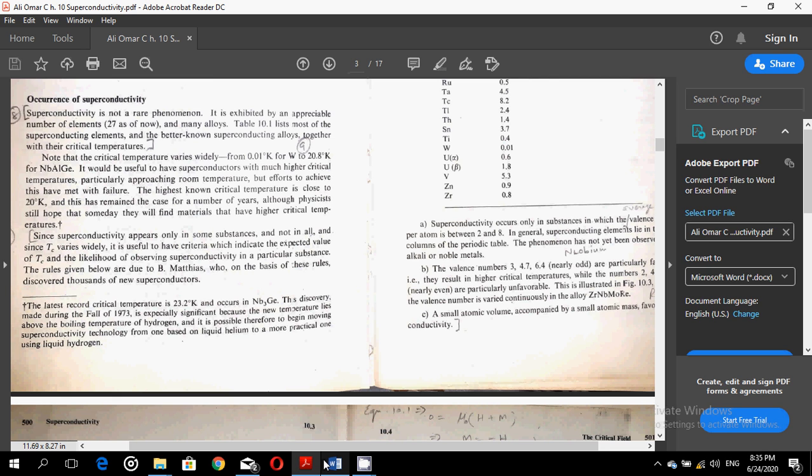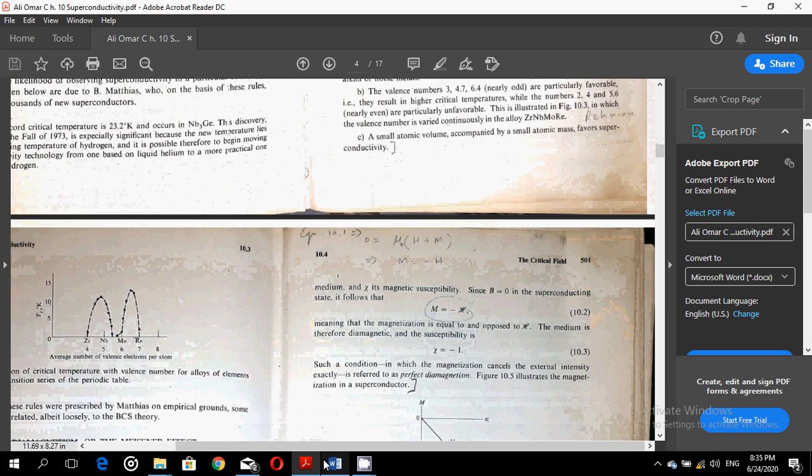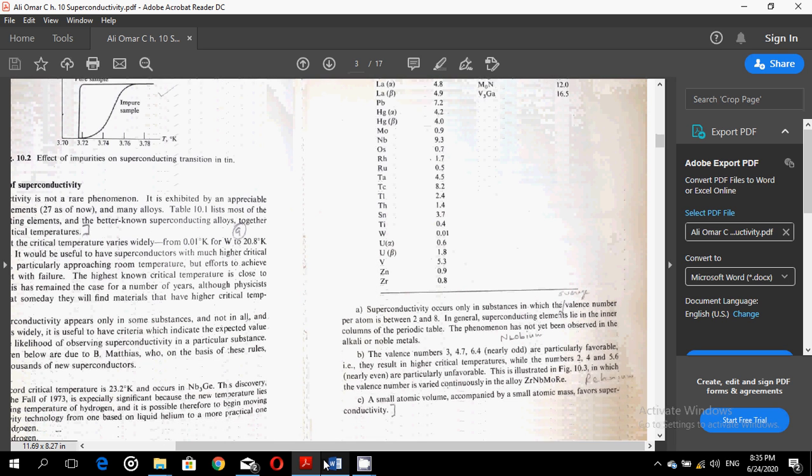Since superconductivity appears only in some substances and not in all, and since Tc varies widely, it is useful to have criteria which indicate the expected value of Tc and the likelihood of observing superconductivity in a particular substance. The rules given below are due to Matthias, who on the basis of these rules discovered thousands of new superconductors.